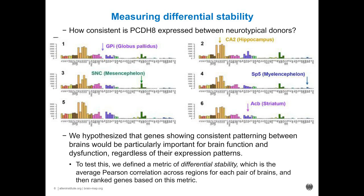Can we download this gene data set from the Allen website? Yes, all of the data is downloadable in multiple forms. The microarray data is available by going to the Download tab on whatever atlas you're in. The mouse data — you can download any individual in situ hybridization image of interest. The quantifications of the data are available through the API; the directions on the API explain how to do that.